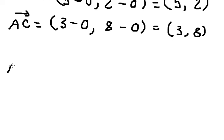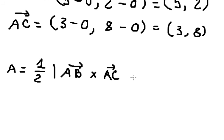So the formula should be, we have 1 over 2, inside the absolute value, and we have vector AB with the cross product with vector AC. So this one...